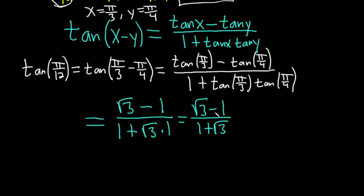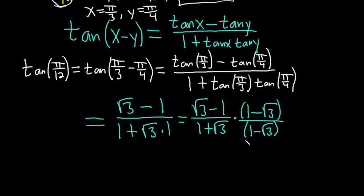A lot of people aren't okay with leaving square roots in the denominator. If you're required to rationalize, we can keep going — though this is technically the correct answer. To rationalize, we multiply by 1 in a clever way: multiply by 1 minus square root of 3 over 1 minus square root of 3, switching the sign in the denominator. This is called rationalizing the denominator.